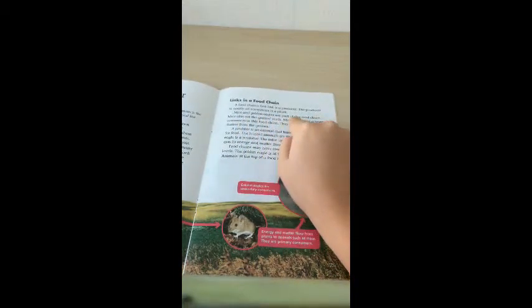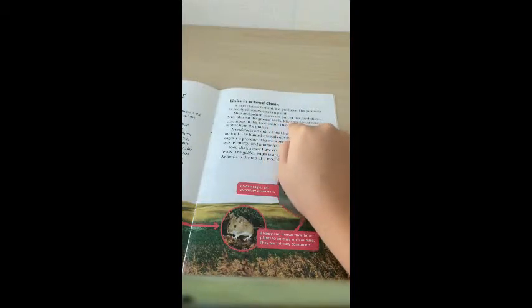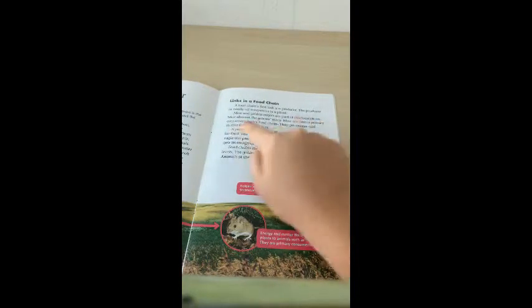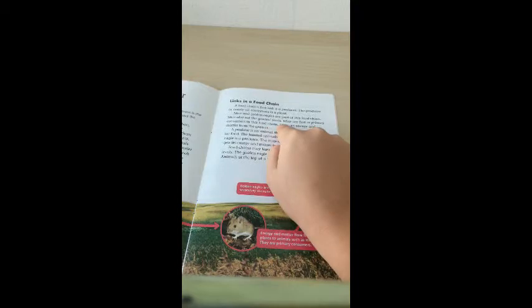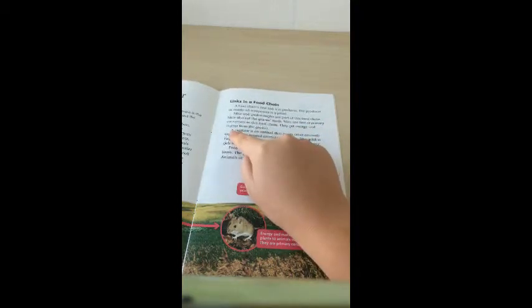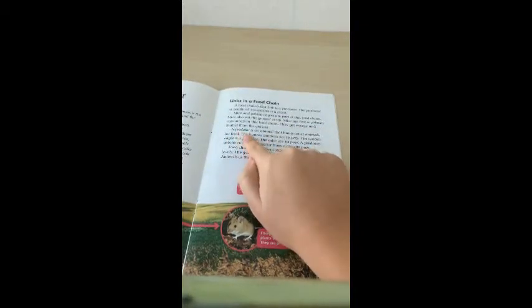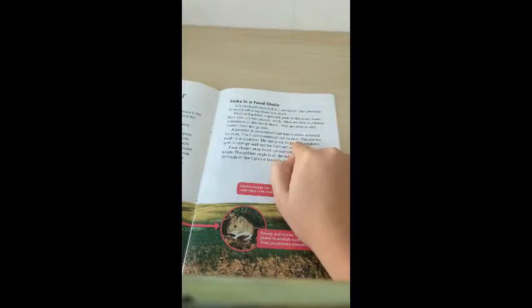Mice and golden eagles are part of this food chain. Mice also eat the grass's seeds. Mice are first or primary consumers in this food chain. They get energy and matter from the grasses. A predator is an animal that hunts other animals for food.